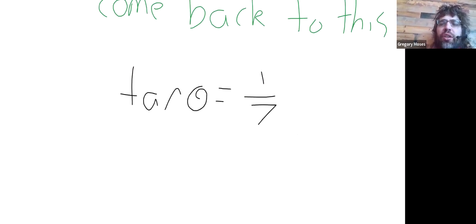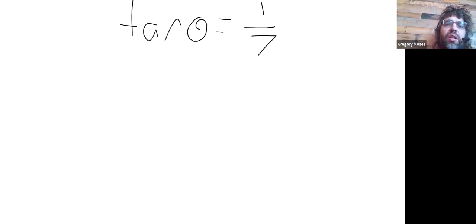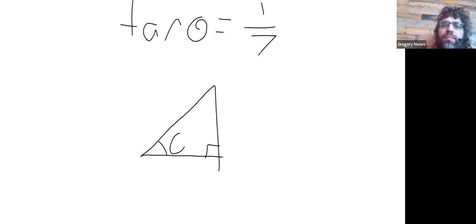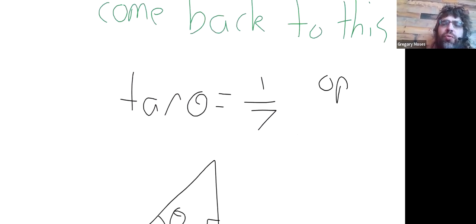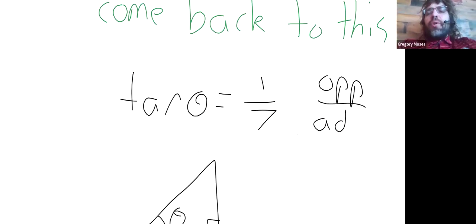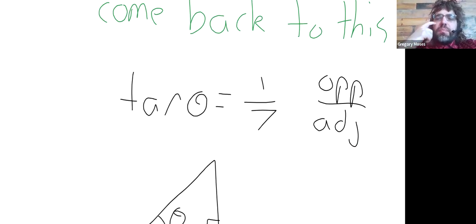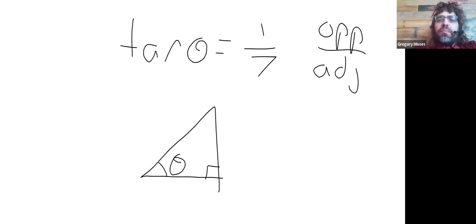The trick here is that we're going to build a right triangle, and then we're going to use right triangle trigonometry. If the opposite over the adjacent is one-seventh, then we can create a right triangle where the opposite is one and the adjacent is seven.